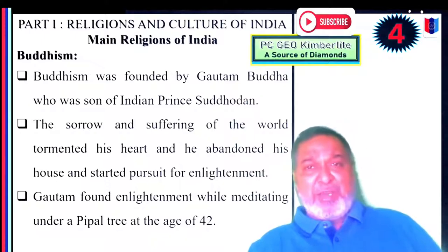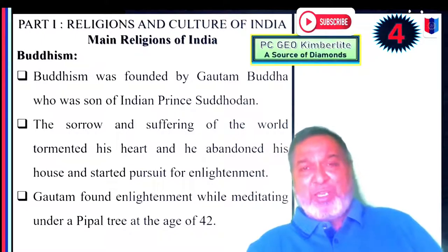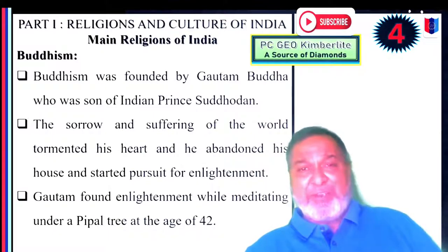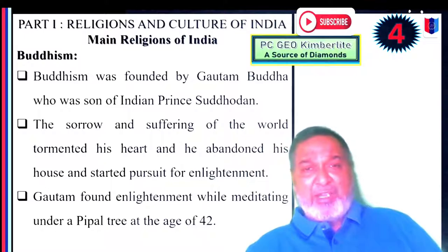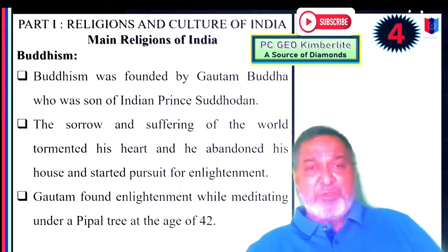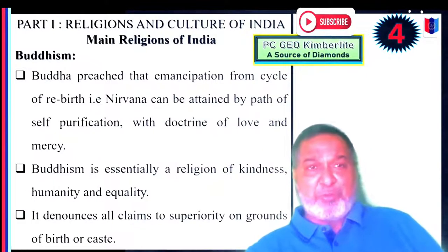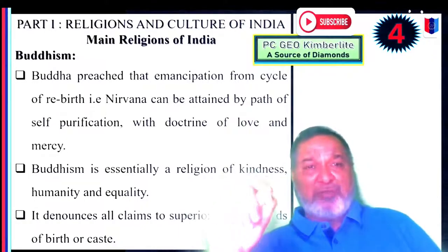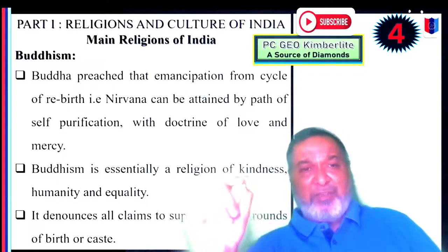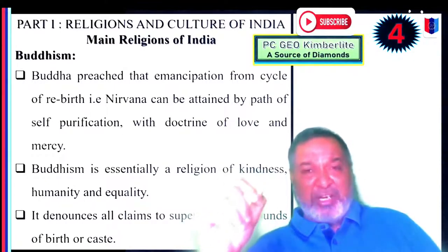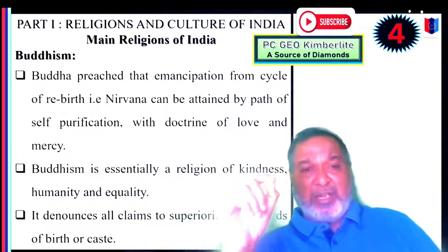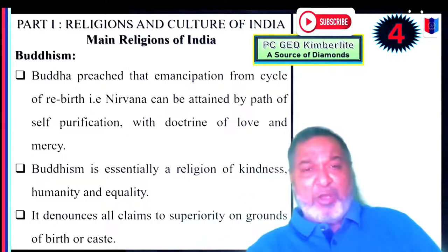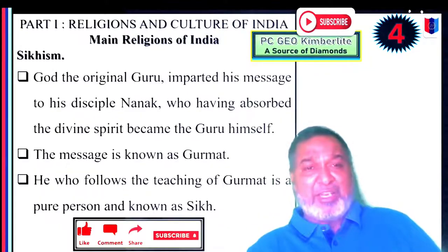Buddhism was founded by Gautam Buddha, the son of Indian prince Sudodhana. The sorrow and suffering of the world tormented his heart and he abandoned his house to pursue enlightenment. Gautam attained enlightenment while meditating under a Peepal tree at the age of 42. Buddha preached emancipation from the cycle of rebirth — Nirvana — which can be attained by the path of self-purification with the doctrine of love and mercy. Buddhism is essentially a religion of kindness, humanity and equality. It denounces all claims to superiority on grounds of birth and caste.